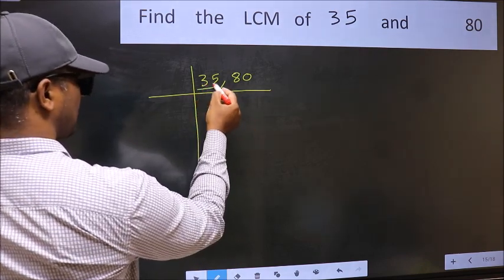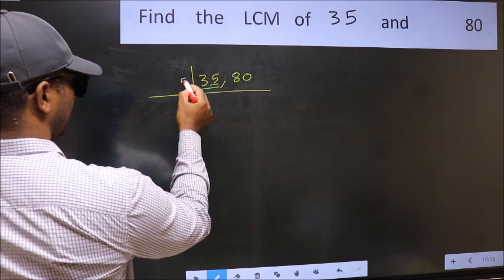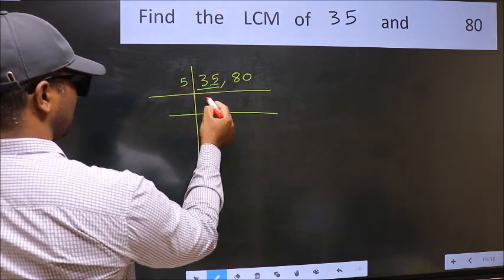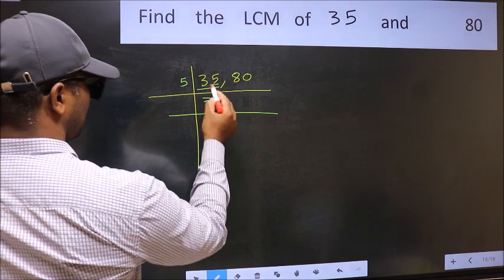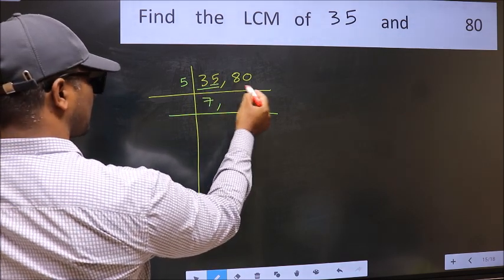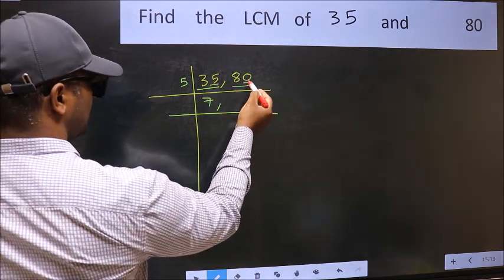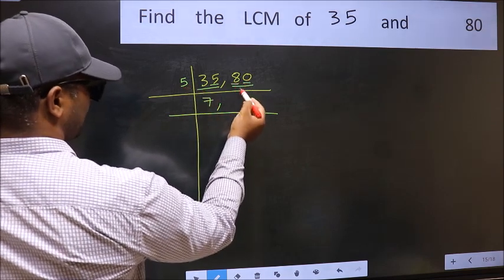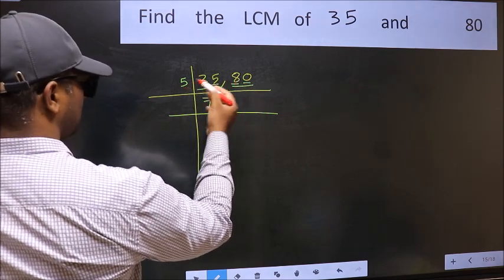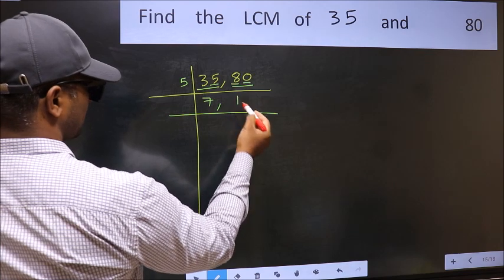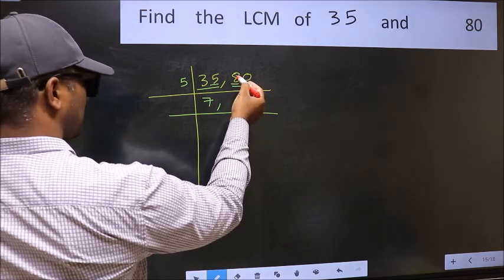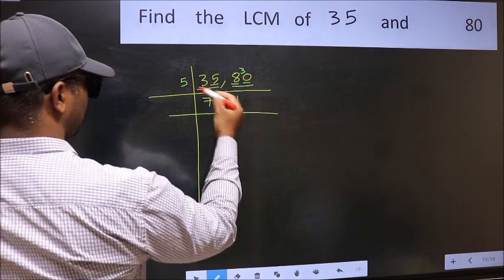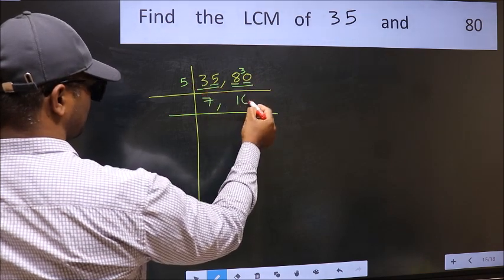In this number, the last digit is 5, so take 5. When do we get 35 in the 5 table? 5 sevens are 35. The other number is 80. Last digit 0, so this is divisible by 5. First number gives 8. A number close to 8 in the 5 table is 5 ones, which is 5. 8 minus 5 is 3, carry forward 30. When do we get 30 in the 5 table? 5 sixes are 30.